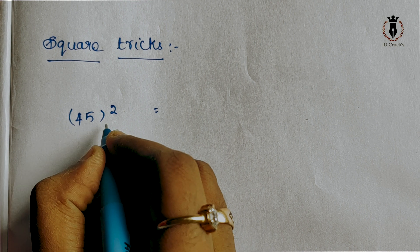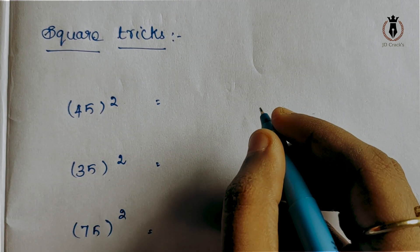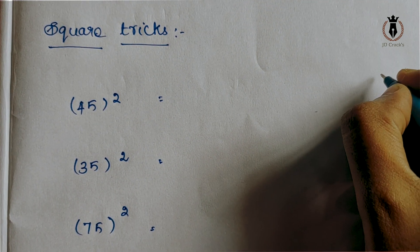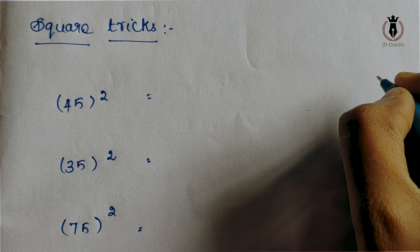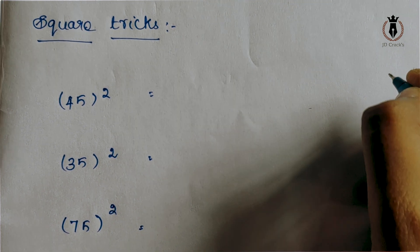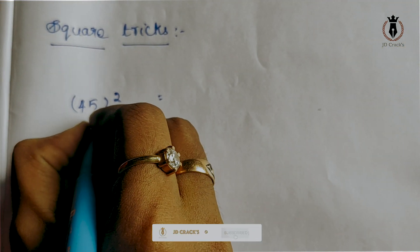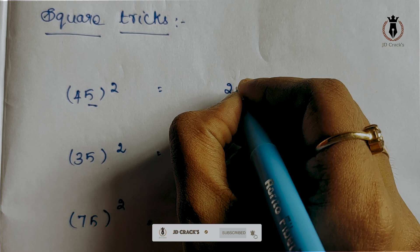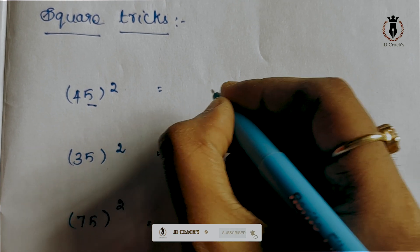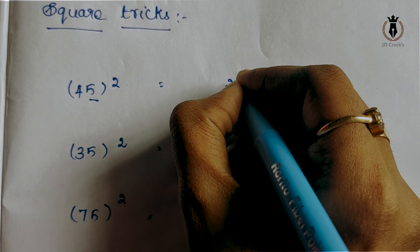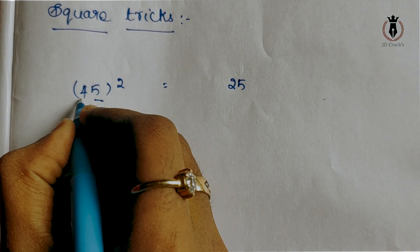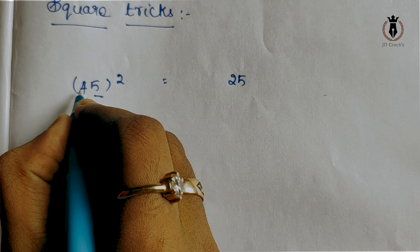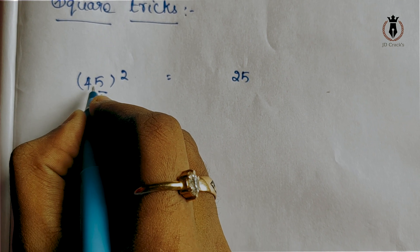First, 45 square. This is a shortcut. 45 square — in the unit place, if we do 5 in the unit place, we will do 5 square. 5 square is 25, so 25 goes in the unit place. Next, we have the remaining number. If there is a 5 square, it is 4 square.